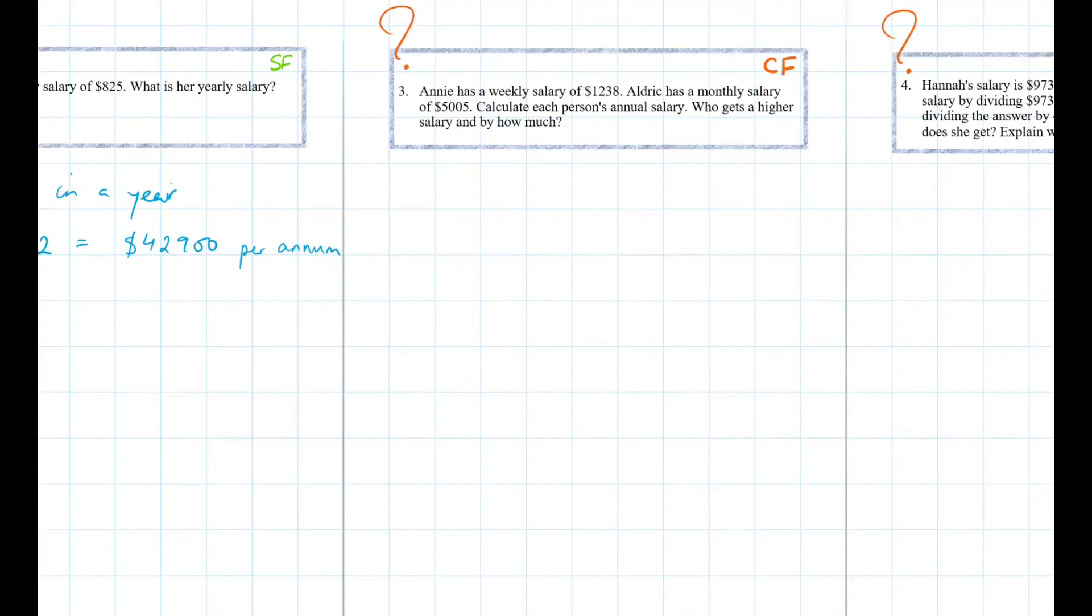So Annie has a weekly salary of $1,238. Aldrich has a monthly salary of $5,005. Calculate each person's annual salary. Who gets the highest salary and by how much? Alright, so in questions like these, we want to first find individual salaries.